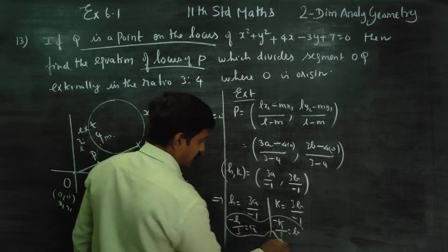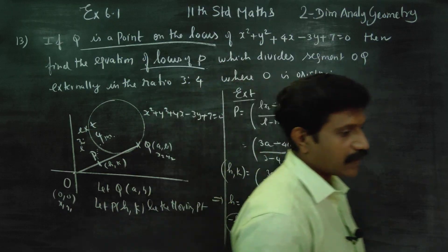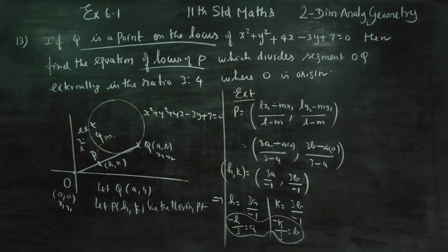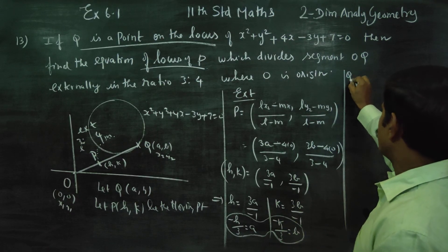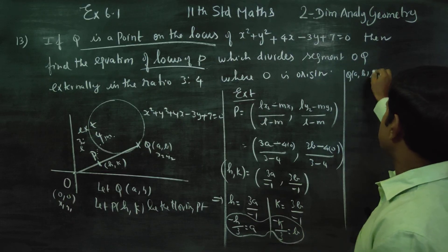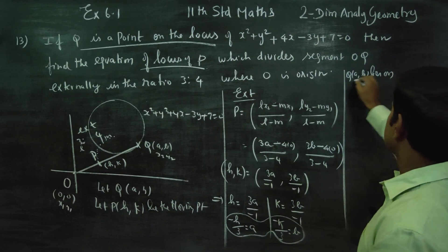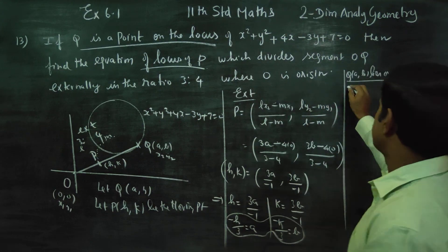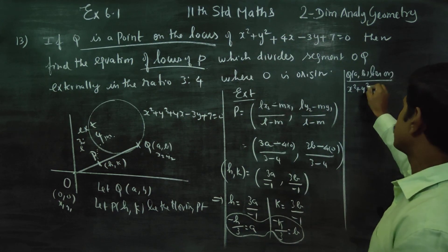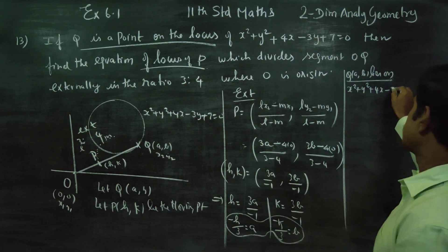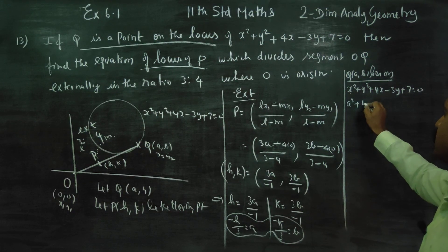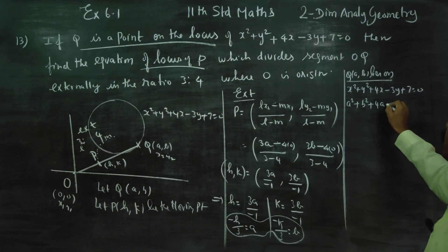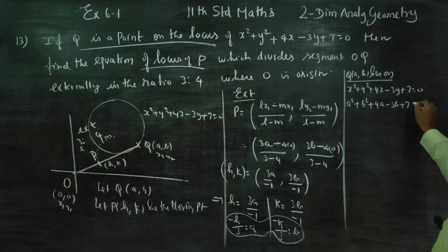Since a and b are the coordinates of Q and Q lies on the curve, substituting into the curve equation: a squared plus b squared plus 4a minus 3b plus 7 is equal to 0.